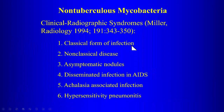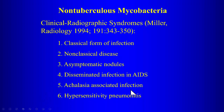Summary of NTM patterns: classical form looks like TB, affecting elderly males with COPD. Non-classical disease is Lady Windermere syndrome — right middle lobe, lingula, elderly women. Asymptomatic nodules can affect anybody. Disseminated infection in AIDS shows lymphadenopathy. Achalasia-associated infection involves Mycobacterium fortuitum rapid growers. Hypersensitivity pneumonitis pattern from MAC inhalation is hot tub lung.